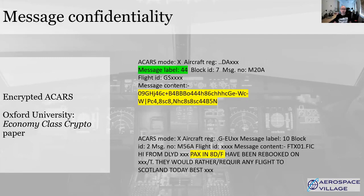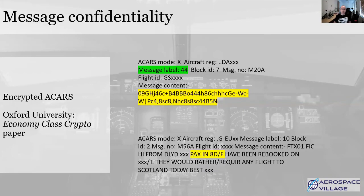You'll probably have noticed that all the example messages shown are actually human readable, because there's no encryption of the data in standard ACARS at all. Some aircraft do send encrypted messages, marked by label type 44. There is a great paper called 'Economy Class Crypto' from the Oxford Aviation Security group, and they were able to decipher these messages through a combination of brute force and other inputs such as knowing where an aircraft was when it transmitted. What they showed is that there is a static cipher key in use across all of these terminals — so it's break once, decode everywhere. Fortunately this data is mostly engineering rather than anything sensitive, but operators should be aware their messages are definitely not private.